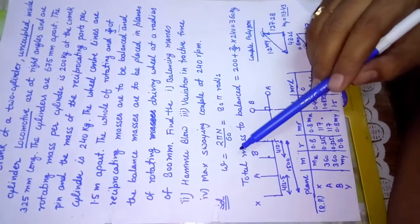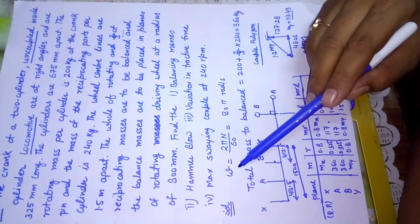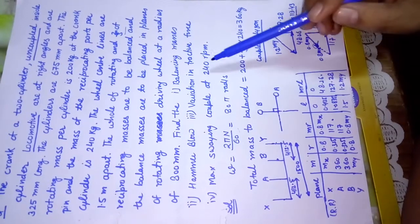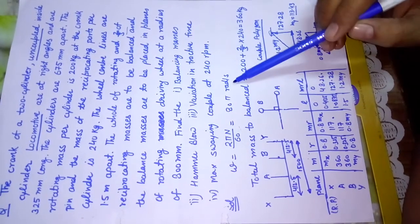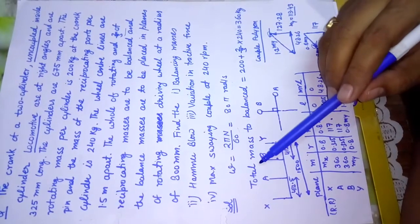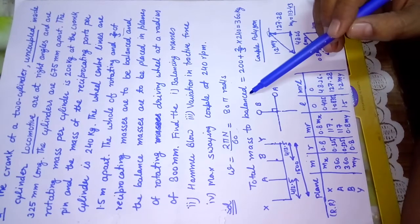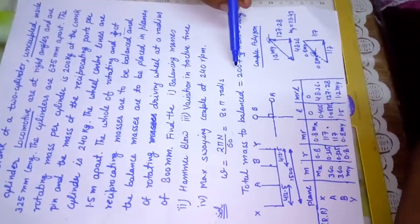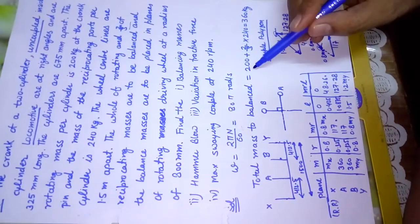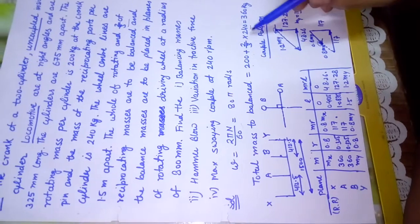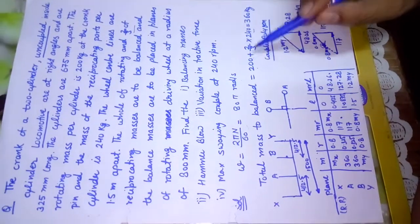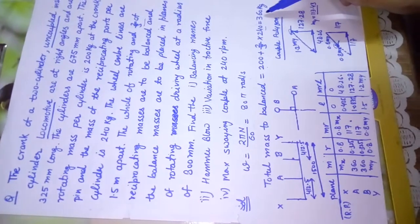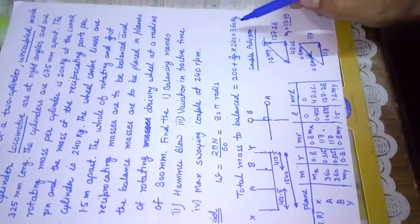First, we calculate omega: ω = 2πN/60, where N = 240 rpm, giving ω = 80π rad/s. Next, the total mass required to be balanced per cylinder is the full rotating mass plus two-thirds of the reciprocating mass: 200 + (2/3 × 240) = 200 + 160 = 360 kg per cylinder. We will proceed using the graphical method.